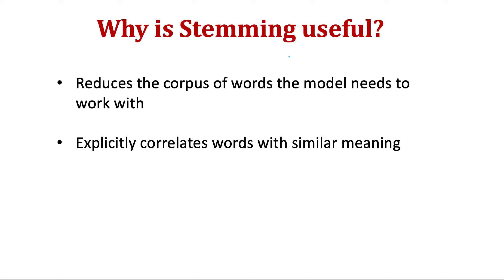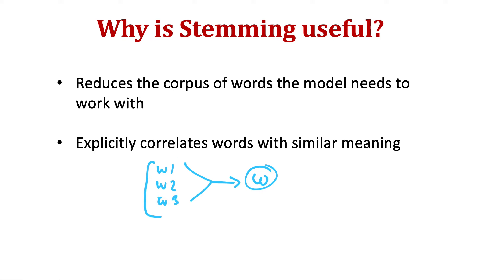Why is stemming so useful? First, it reduces the corpus of words that the model needs to work with. Second, we are explicitly telling our model that these words are correlated — when we reduce word one, word two, word three using a stemmer to a common word, we are explicitly indicating to the model that these are related. Without stemming, the model may or may not figure that out from context alone, so it's better if we can explicitly tell it.